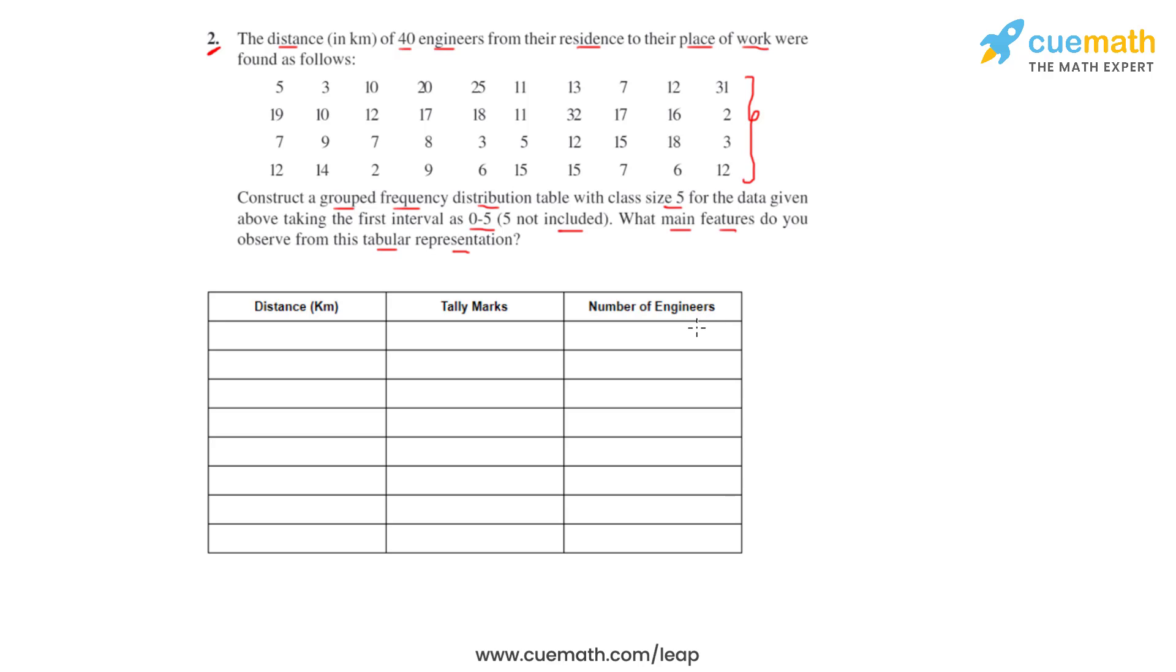Before we start representing this data in the tabular column, let's understand what we have given in this question. We have been given the distances of the engineers from the residence to their place of work, so we can take that as d which is given in kilometers. The class size is 5 and they have given us that we have to start with a class which is 0 to 5.